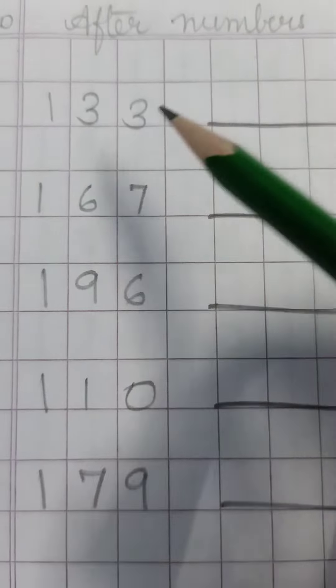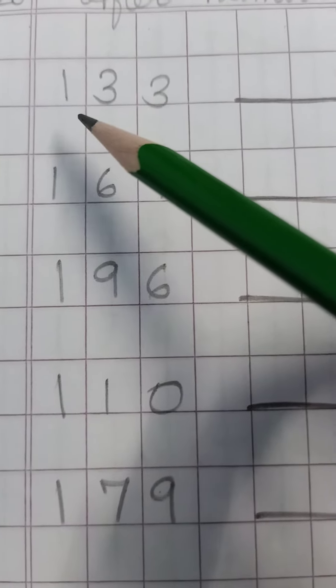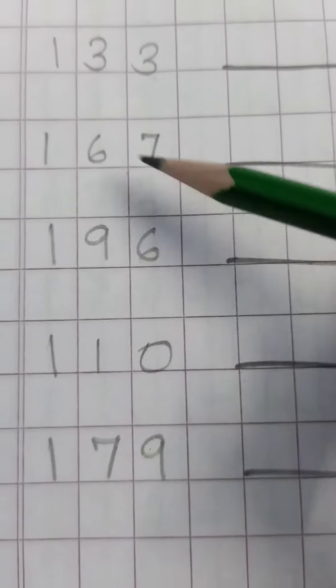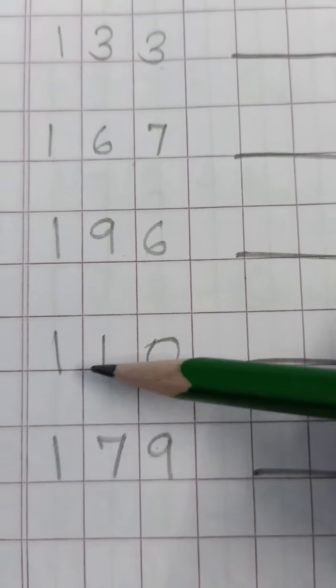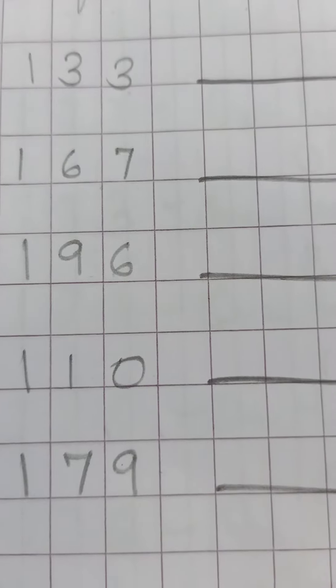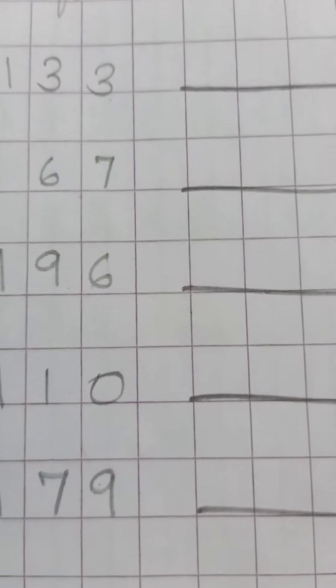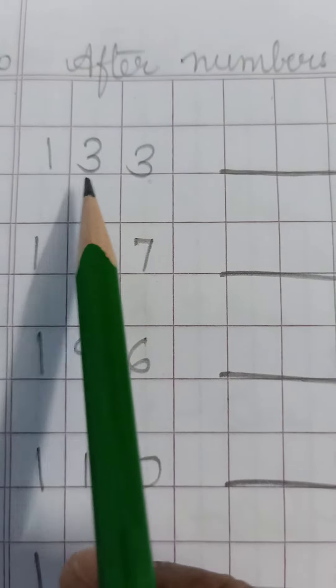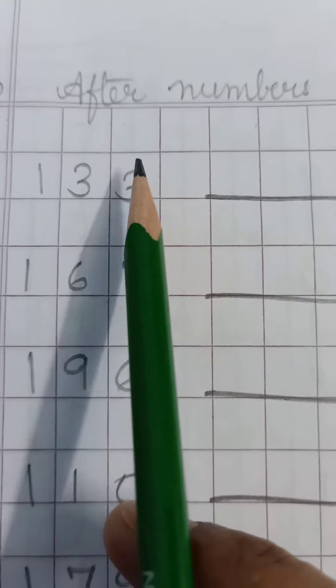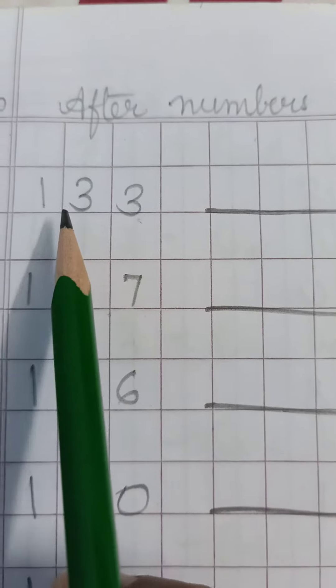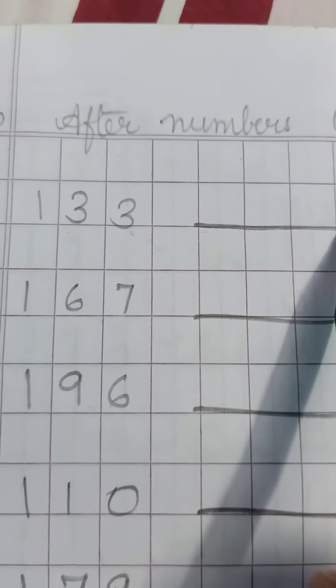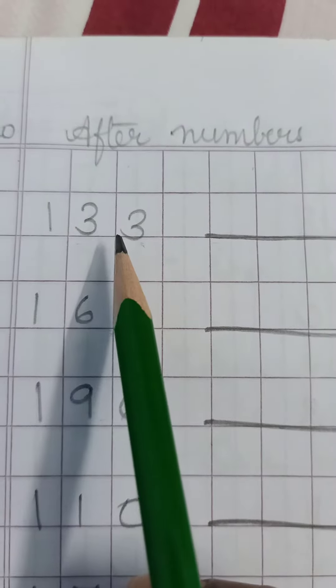Children, the numbers are 133, 167, 196, 110, 179. So we will start with number 133. Here after this number there's a blank, so we have to write the number which comes after the given number.